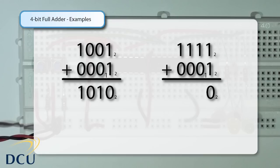1 plus 0 plus 1 gives us 0 with a carry of 1. 1 plus 0 plus 1 gives us 0 with a carry of 1, and finally 1 plus 0 plus 1 gives us 0 with a carry of 1.